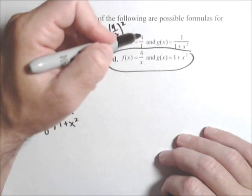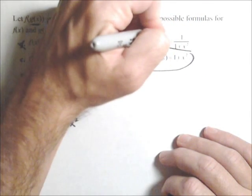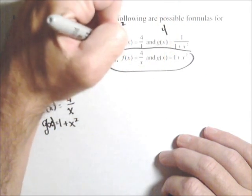B, you have four over one, which is just four. So there's really no way to put g of x in there. So the composition would have just been four. So b can't work.